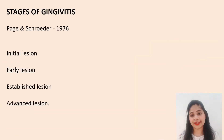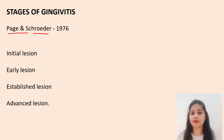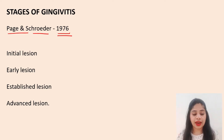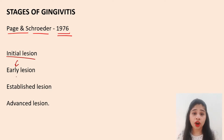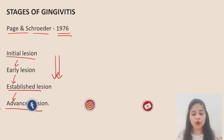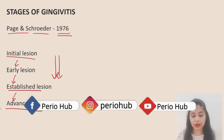The stages of gingivitis are broadly divided into four categories, given by Page and Schroeder between 1972 and 1976. They divided this disease entity into four major events: the initial lesion, which progresses into the early lesion, then the established lesion, and ultimately the advanced lesion. This is the way disease progression occurs.